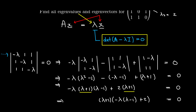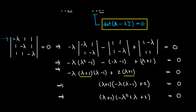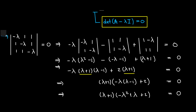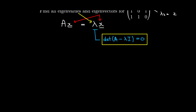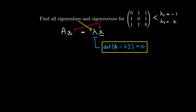We've solved the first part of our problem — we found all possible eigenvalues — but we're not done. We have to go back and find all the x for each possible lambda. Let's take lambda 1 equal to negative 1 and find all of its eigenvectors. The method will be very similar for lambda 2. For lambda 1 equal to negative 1, we need to solve the equation Ax equal to negative 1 times x.